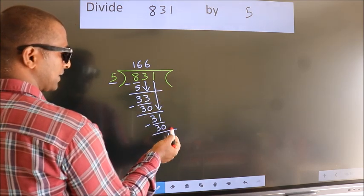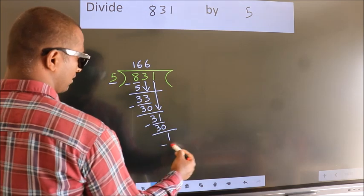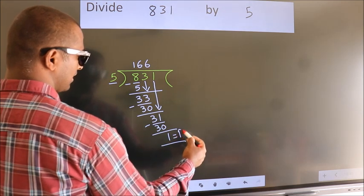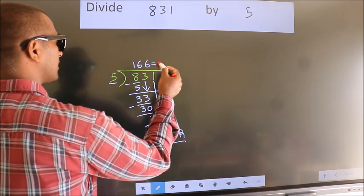No more numbers to bring it down. So, we stop here. This is our remainder. This is our quotient.